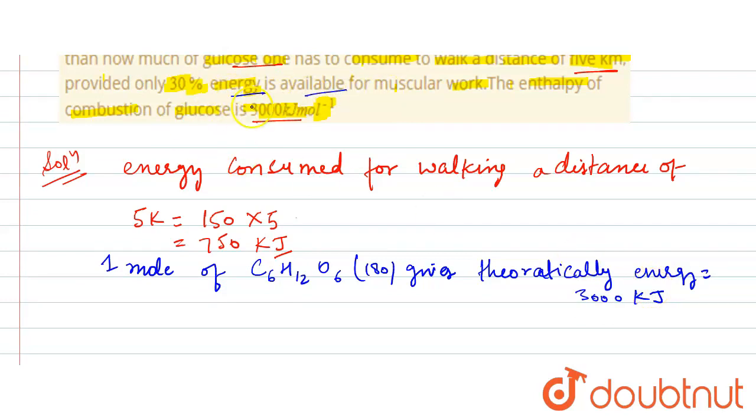So now actual energy available is 30 percent.